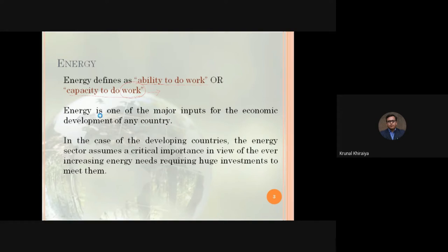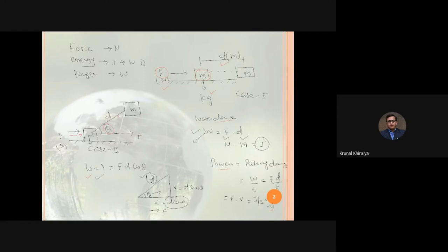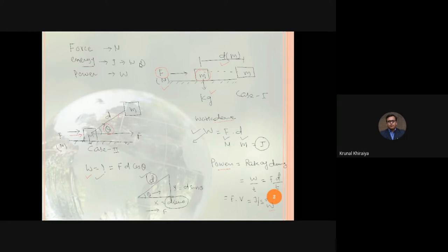We then covered the basics of force, energy, and power. Under the action of force, an object moves — mass is measured in kg. We defined work done in two cases, arriving at the definition: work is force into displacement in the direction of application of force. The unit of work done is joule, and energy has the same unit since energy is the capacity to do work. Power is the rate of doing work.